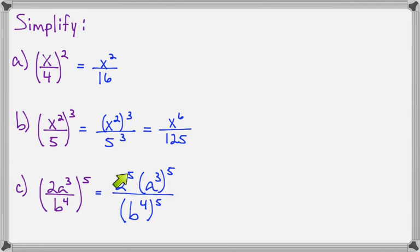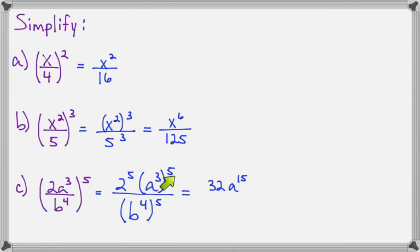Now 2 to the fifth — if you work it out: 2 times 2 is 4, times a third 2 makes 8, times a fourth 2 makes 16, times a fifth 2 makes 32. And a to the third to the fifth will make a to the fifteenth, because we multiply the exponents — it's power to power.